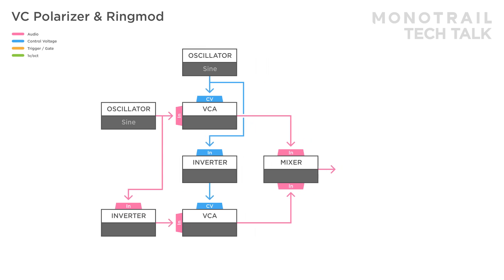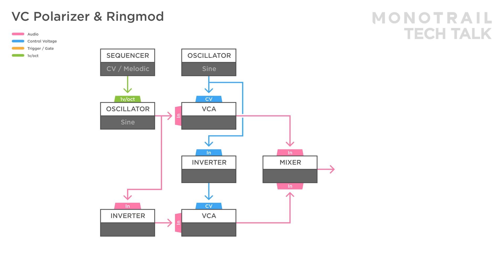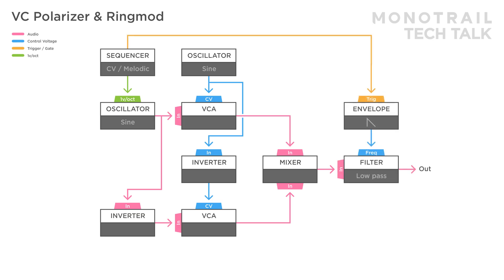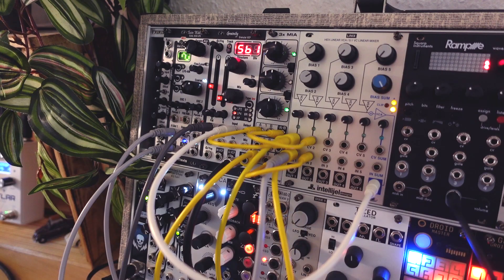Here the carrier oscillator is sequenced and the signal from the second oscillator is visualized in blue because that is the modulator. Remember though, it runs at audio speeds and is very audible in the result as well. A filter and envelope are used to shape the sound.